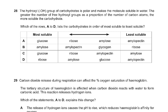Coming to question number 28: the hydroxyl group of carbohydrates is polar and makes the molecule soluble in water. The greater the number of free hydroxyl groups as a proportion of the number of carbon atoms, the more soluble the carbohydrate. Glucose is C6H12O6; ribose is C5H10-something; amylose is many glucose units joined together; and amylopectin is even more, with 1-4 and 1-6 bonds. The answer is A, because it says the number of free hydroxyl groups as a proportion of the number of carbon atoms — that is the catch in it.